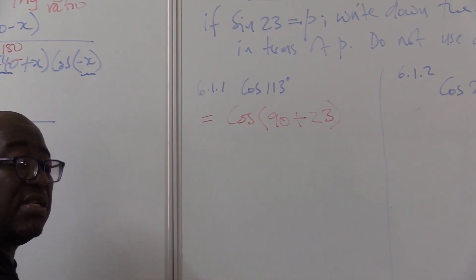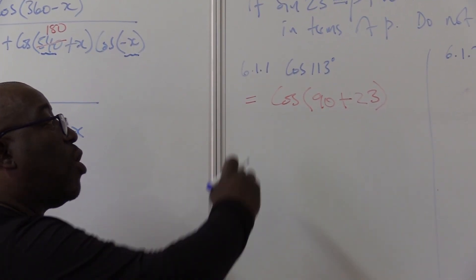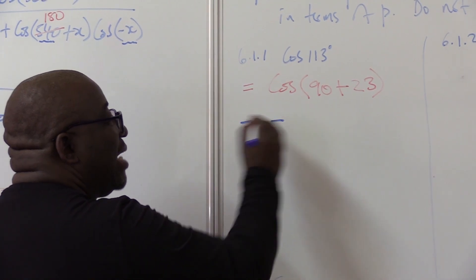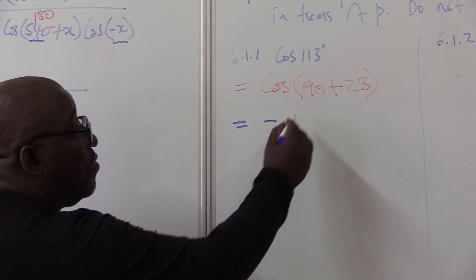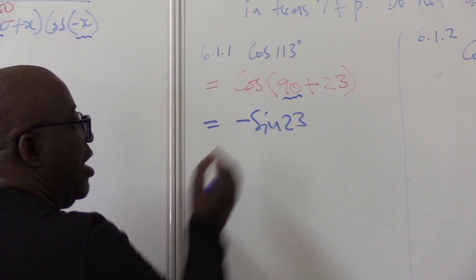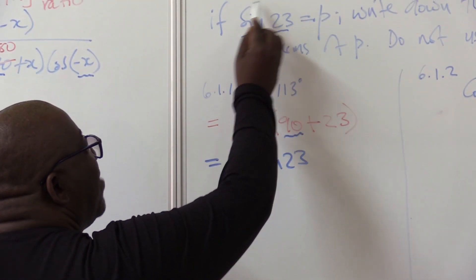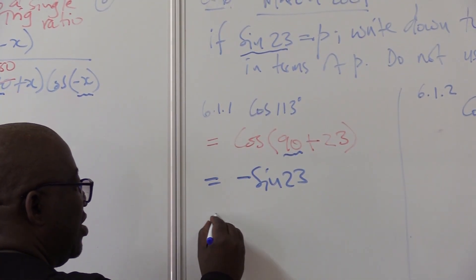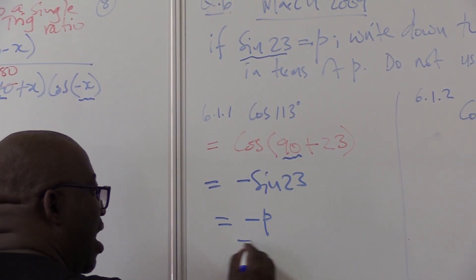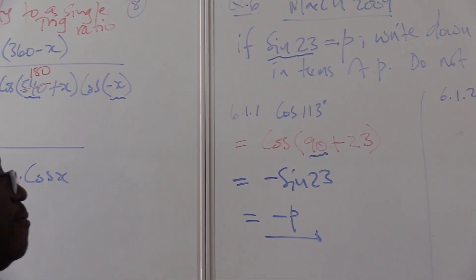90 plus — which quadrant is that? It is the second quadrant. How is cosine on the second quadrant? Cosine is negative on the second quadrant. Because we've got 90, cosine will change into sine of 23. Wherever I see 23, I push in P. So the answer in this case will be minus P.